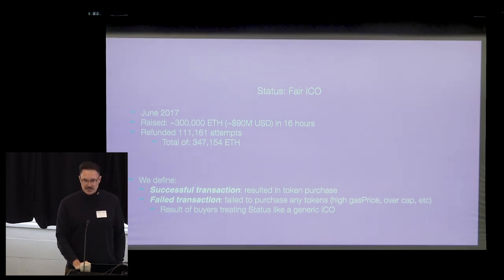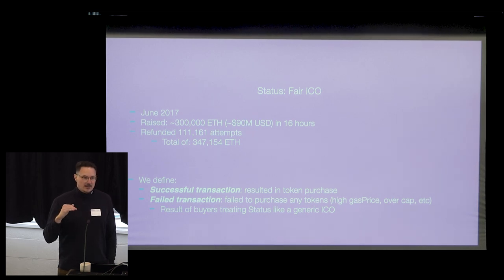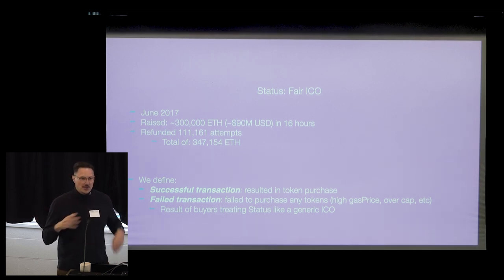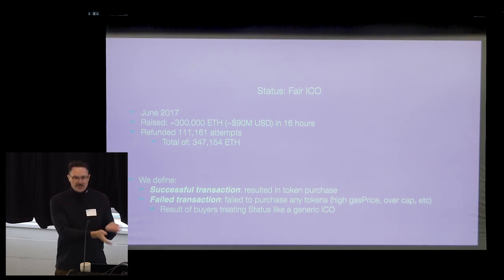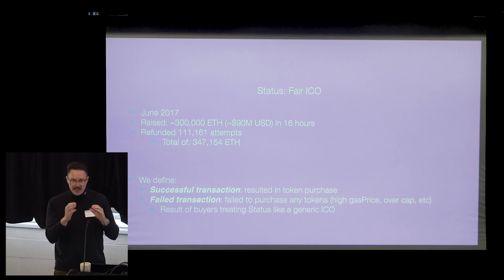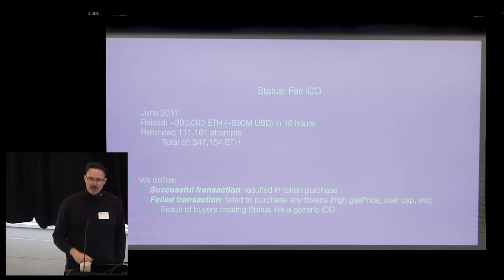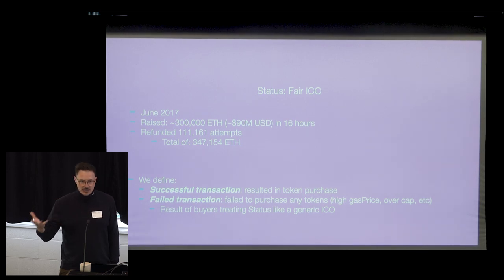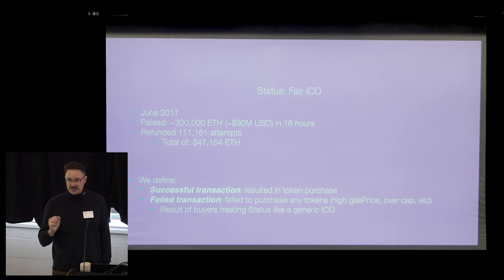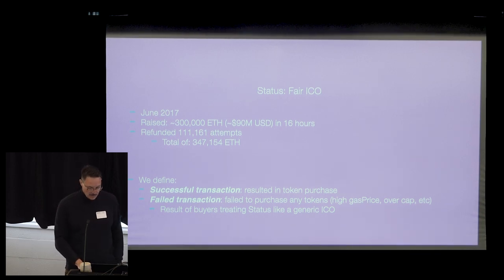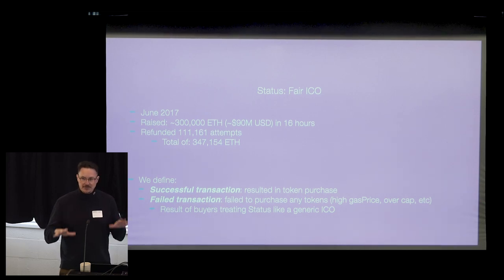Status raised about 300,000 ETH — roughly $90 million US at the time — and sold out in 16 hours. But a lot of people who tried to buy weren't able to because they didn't know about the special rules. People using scripts from the previous week's ICO didn't know about the dynamic price cap or the gas price limit, so their transactions were still going out with values above the caps. As a result, about 50% of all transactions were successful and about 50% were failed — still processed by Ethereum, just not resulting in a trade.